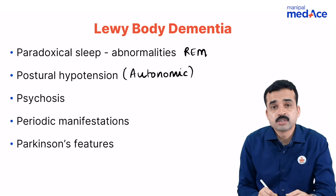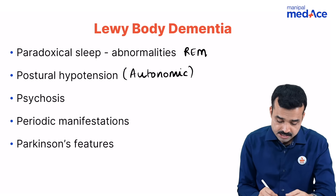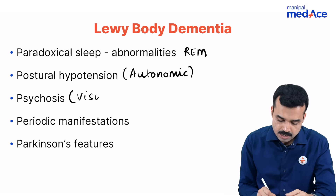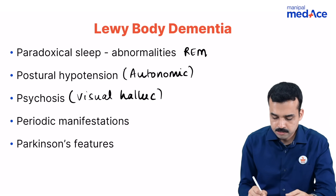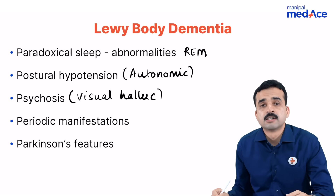The third P is psychosis, especially psychotic symptoms like visual hallucination — a very prominent early manifestation in Lewy body dementia.